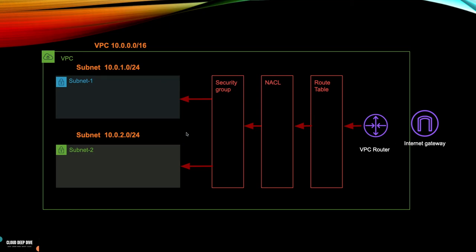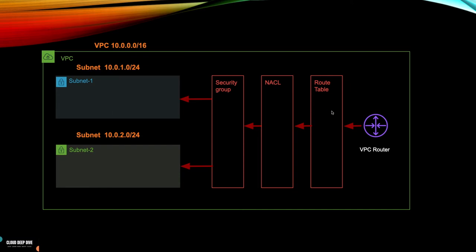Why do we need an internet gateway? Right now, if we look at this diagram, if you launch any EC2 instance in any of these subnets and they try to connect to the internet, or anyone from the internet tries to connect to these subnets, they won't be able to do it. This architecture is like your home where you have rooms with computers, but because you haven't subscribed to any internet connection, those computers can't access the internet. The first step is to attach an internet gateway to the VPC.